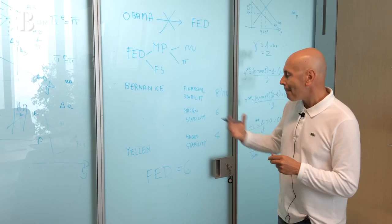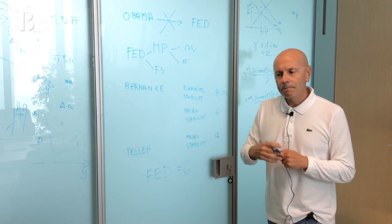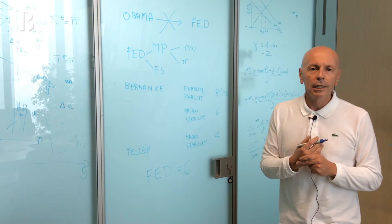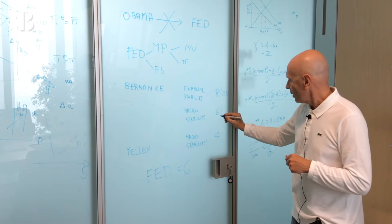Then he zoomed in on macro-stability problems in order to trigger employment without too much inflation. In this field, he abandoned the rules which characterized the previous years of Fed action. And without the rules, there is too much ambiguity and too much discretion. So my grade is lower: 6 out of 10.